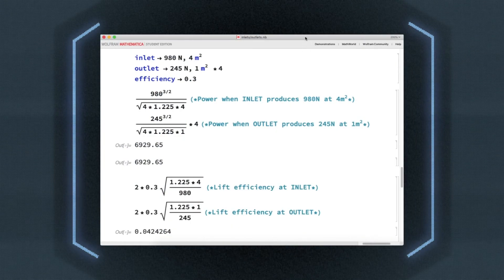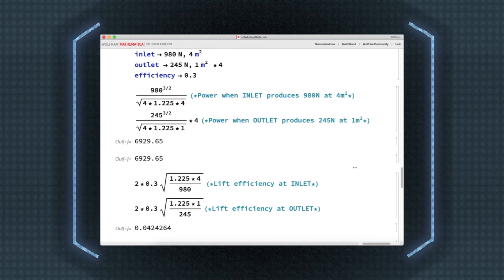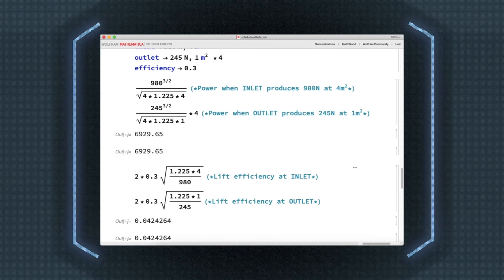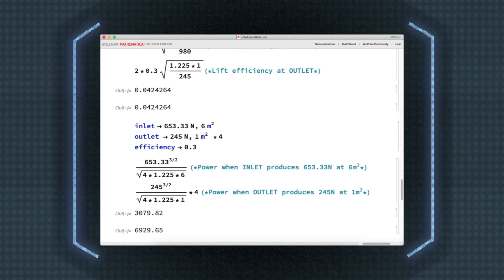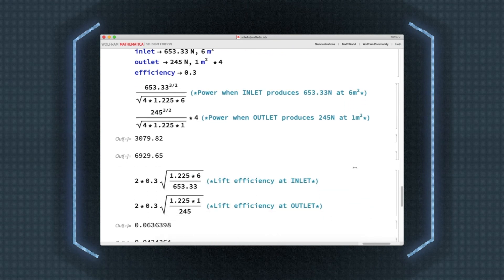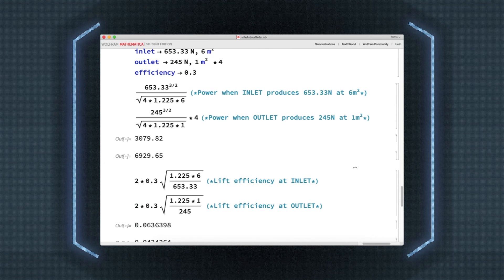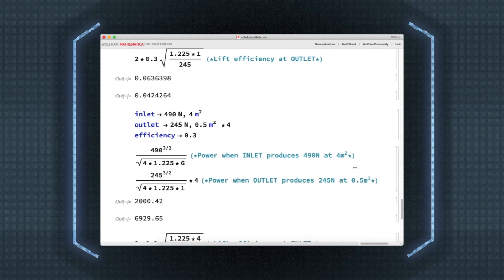In the 4 square meter inlet 1 square meter outlet setup, there was mathematically no difference between having one large fan or four smaller fans, so I had to lower the thrust required at the inlet by varying the areas. I chose having a 6 square meter inlet from the first graph and 0.5 square meter outlets from the second graph to see what changed and applied the equations.